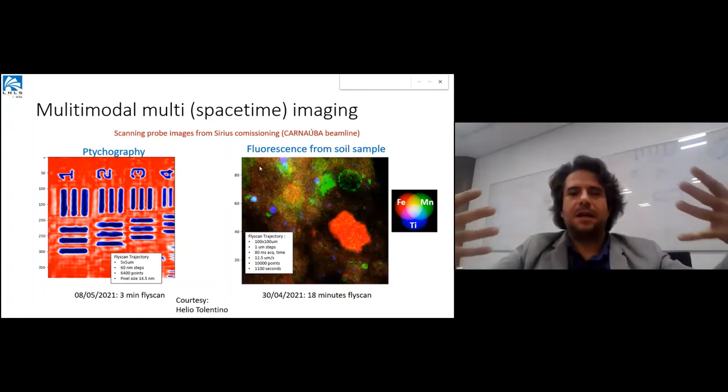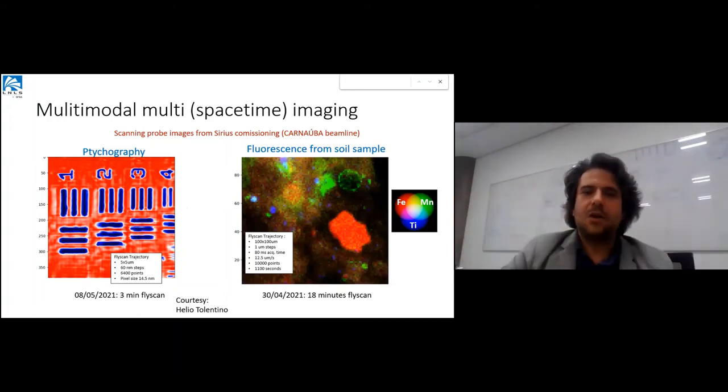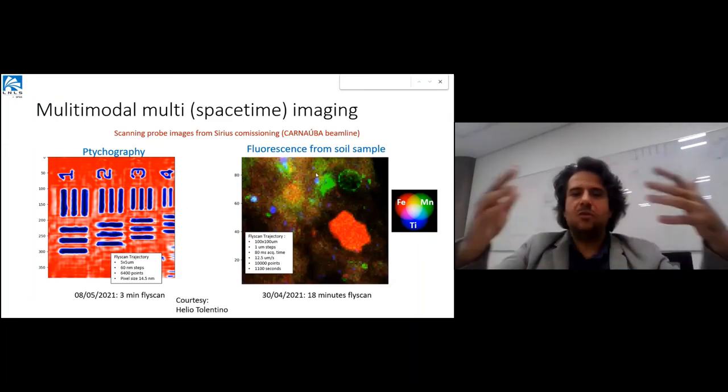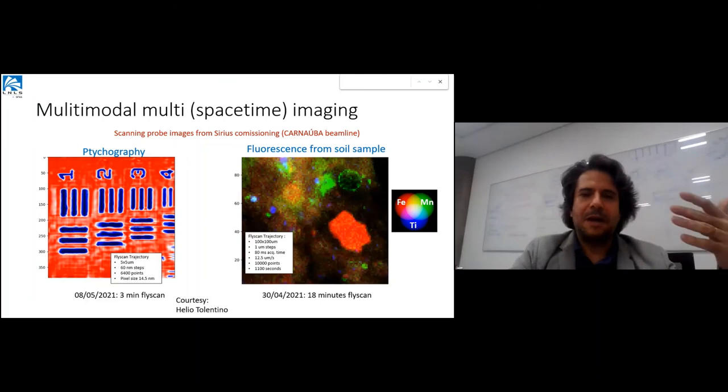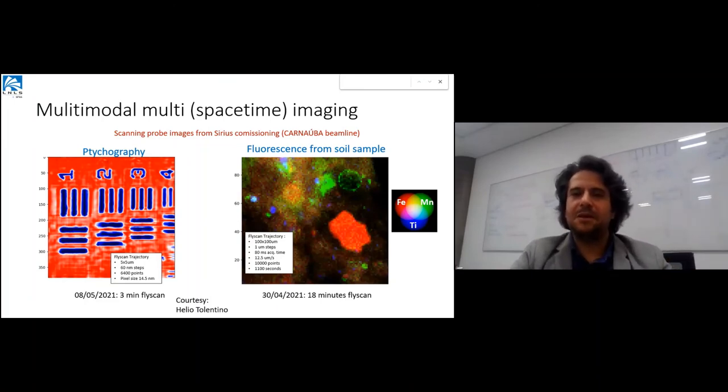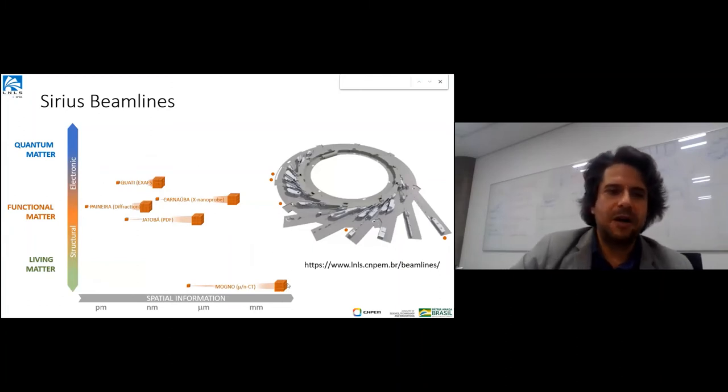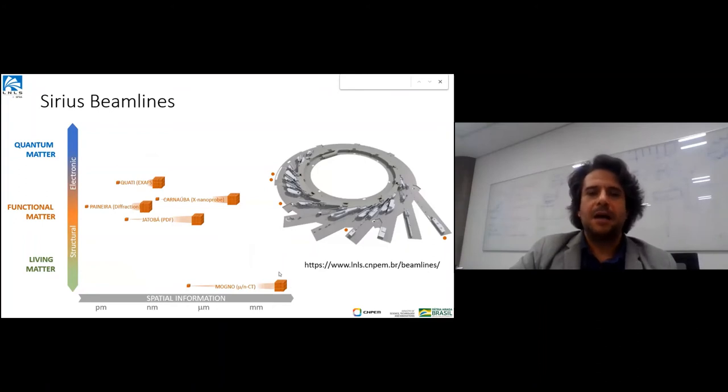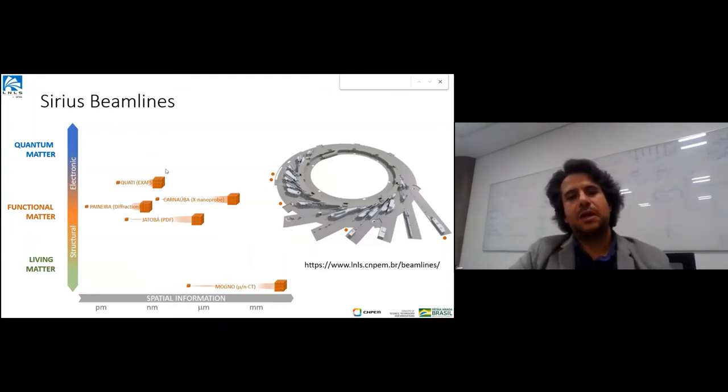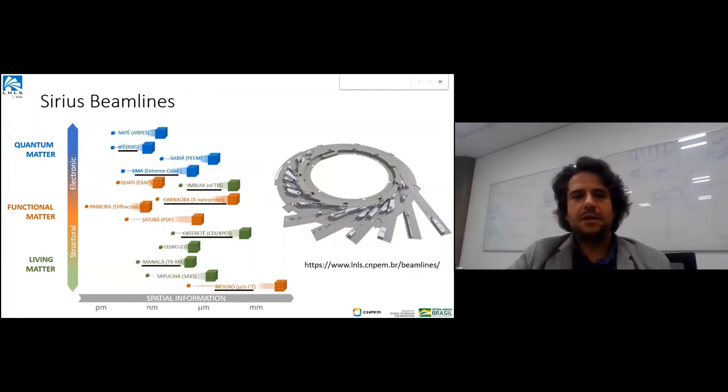First steps in ptychography and fluorescence from a soil sample where we can see with submicrometer resolution the distribution of different elements. The idea is to interleave these two results and use ptychography and fluorescence tomography to obtain 3D mapping of elements in soil or other systems with nanometer resolution. With that, I conclude the suite of beamlines for functional heterogeneous and hierarchical matter: from tomography to nanoprobe, diffraction, PDF, and XAFS.